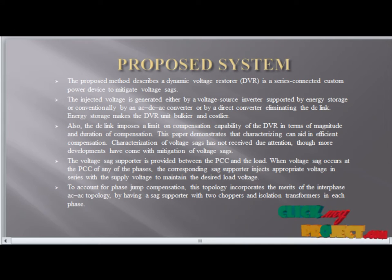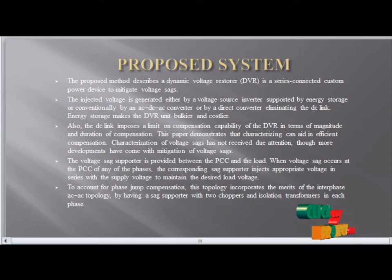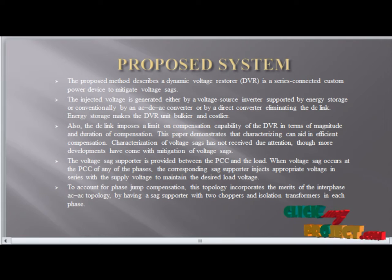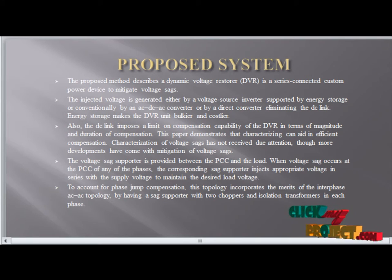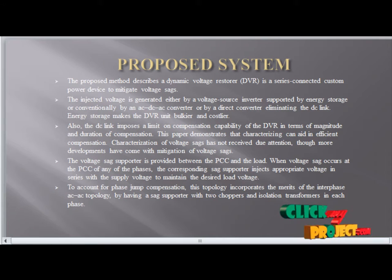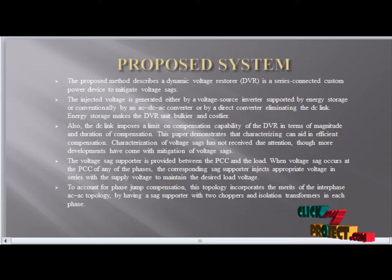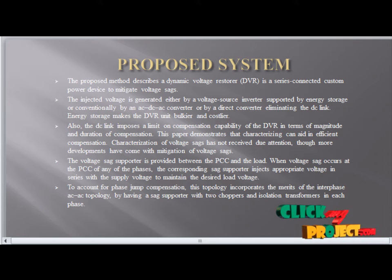Proposed system: we have used a dynamic voltage restorer series connected as a custom device to mitigate voltage sag. It is an AC to DC and DC to AC converter. It is a direct converter eliminating the DC link. The energy storage makes the DVR unit bulkier and costlier. The DC link input limits the compensation capability of DVR in magnitude and duration.